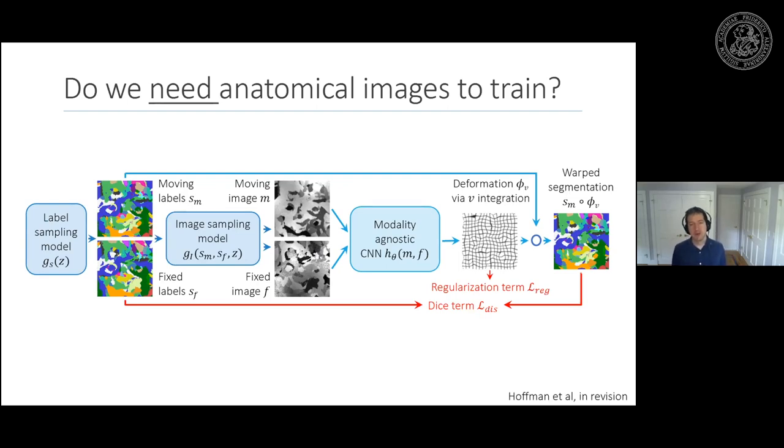We realized that registration networks don't really care what you're registering — they match up shapes. So why constrain ourselves to brain label maps? We did this for completely random label maps: random blobs or shapes, warped in two different ways, filled with random intensities and artifacts. We train two SynthMorph networks — one on synthesized brains, one on synthesized random shapes — and compare on real data. The network only sees images but is told to align the underlying segmentations that produced those images, forcing it to ignore contrast and focus on shapes.